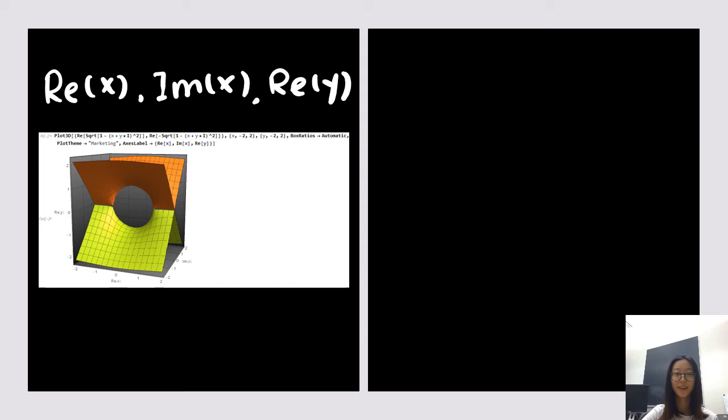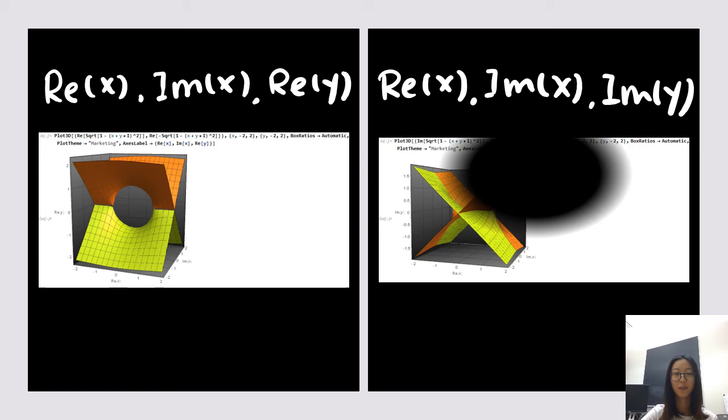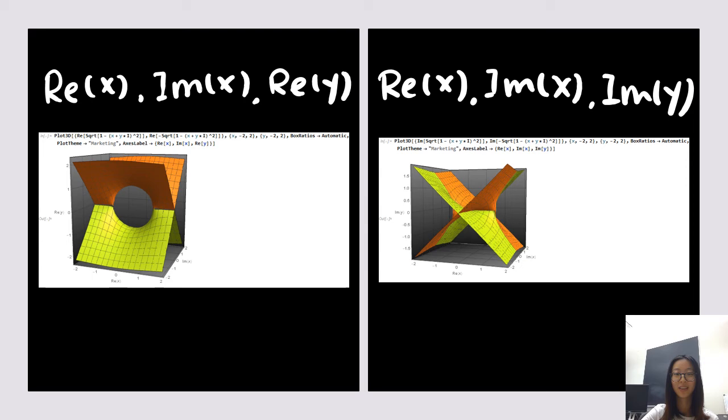So, here are the plots. On the left, we show real and imaginary part of x and the real part of y. On the right, we show real and imaginary part of x and the imaginary part of y. Did you imagine that a circle can be so beautiful when it's complexified?